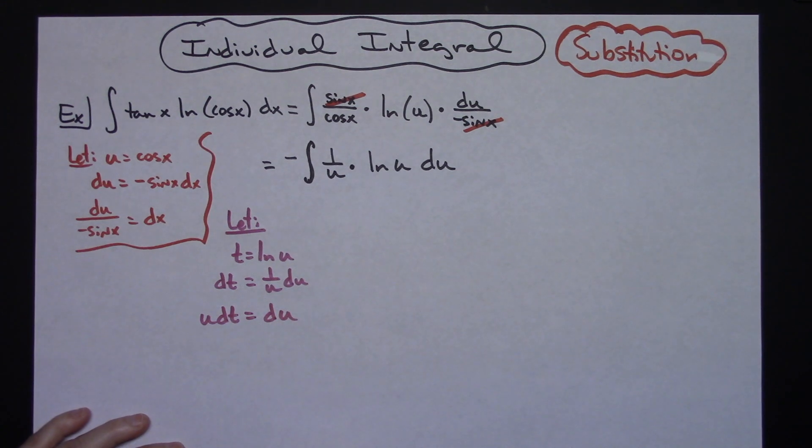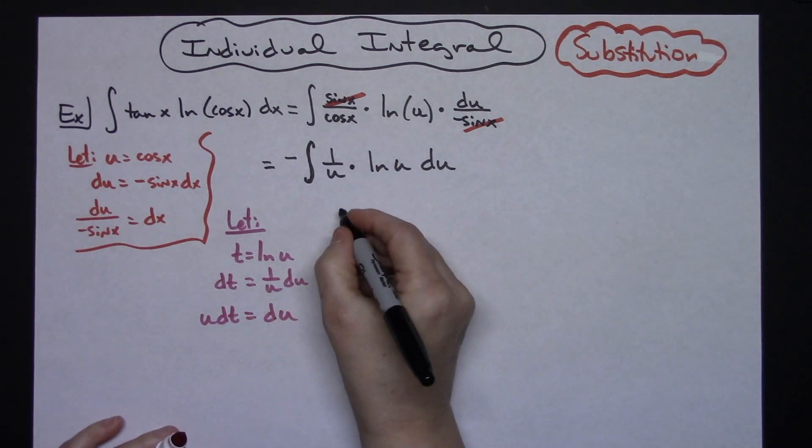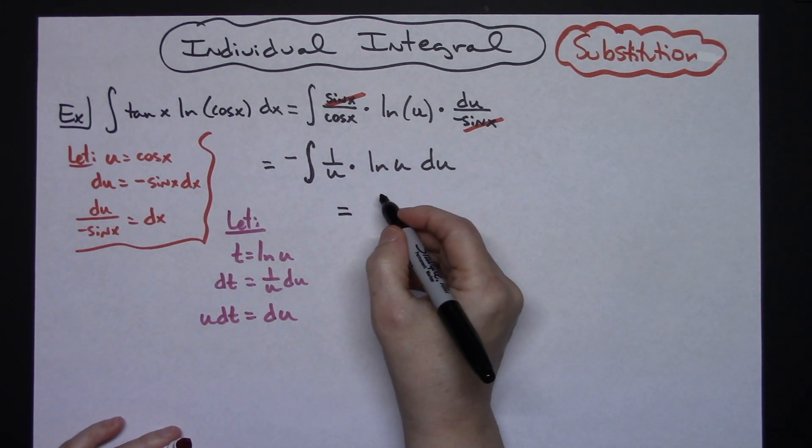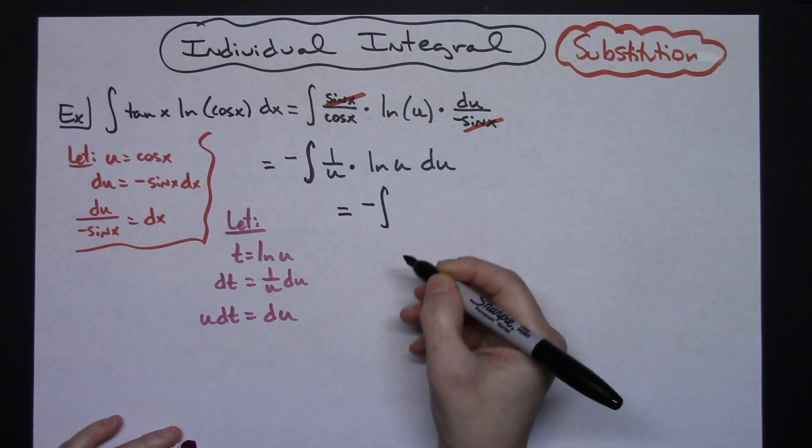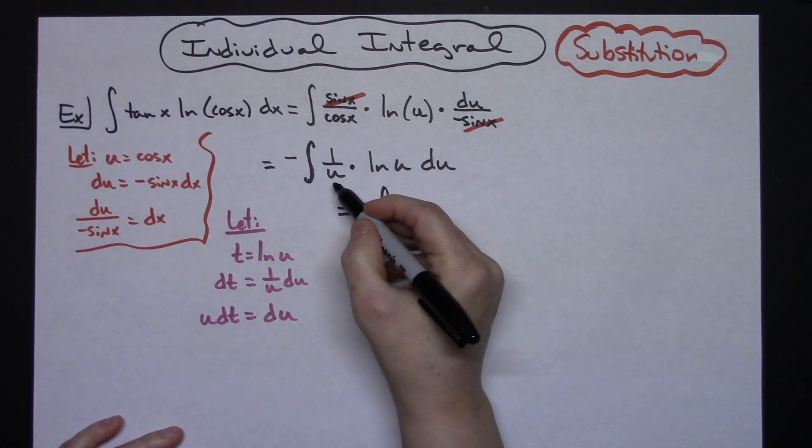So now I'm going to come back up to this original equation and I'm going to start making some substitutions. I'll still have the negative that's out in front of my integral. Then I'll have my integral. Alright, I'm still going to have the 1 over u.